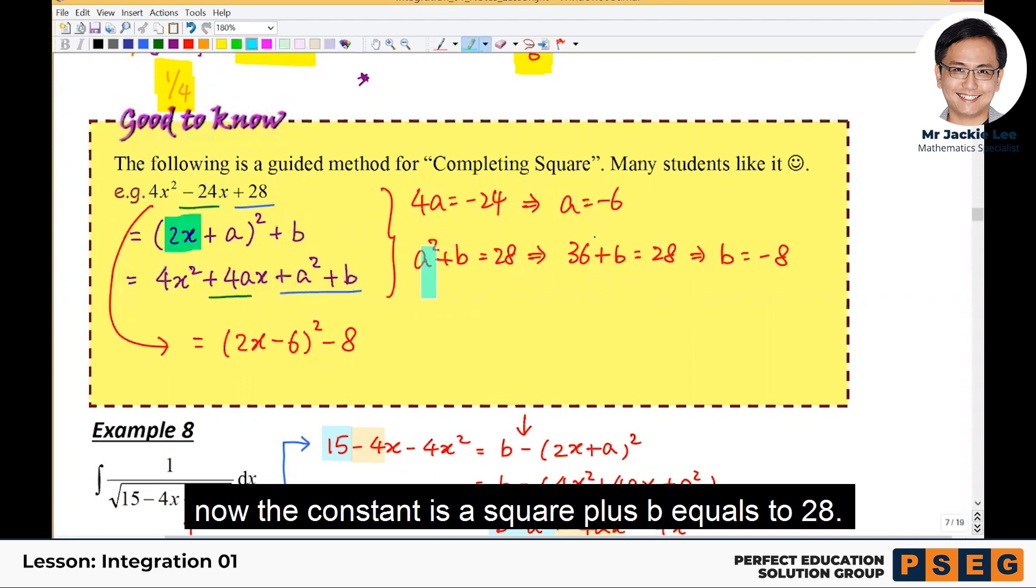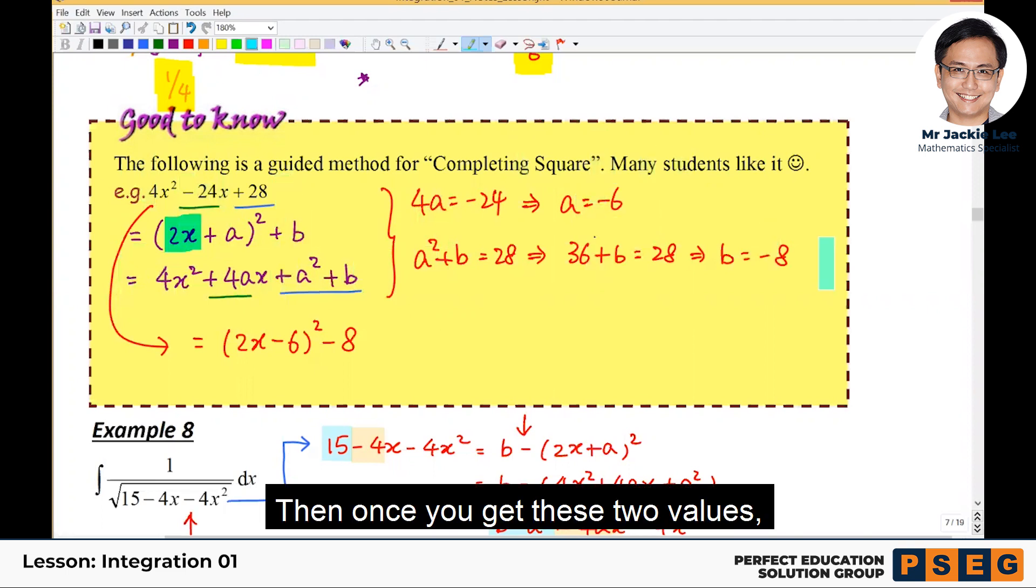Then followed by the constant. Now the constant is that a square plus b equals to 28. With the value for a, then you can find b. Then once you get these two values, complete the square already.